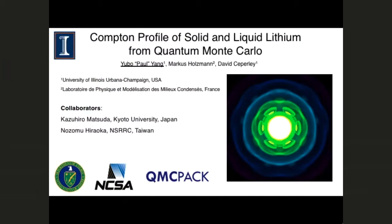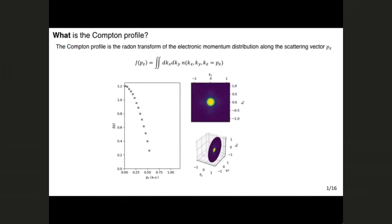Before I start, I just want to thank my collaborators on the theory side. I work with Marcus Holzman from France, and we also work with a few experimentalists from Japan. Just to start out, I want to define what the Compton profile is for you. In one sentence, the Compton profile is the Radon transform of the electronic momentum distribution along a scattering vector in z.